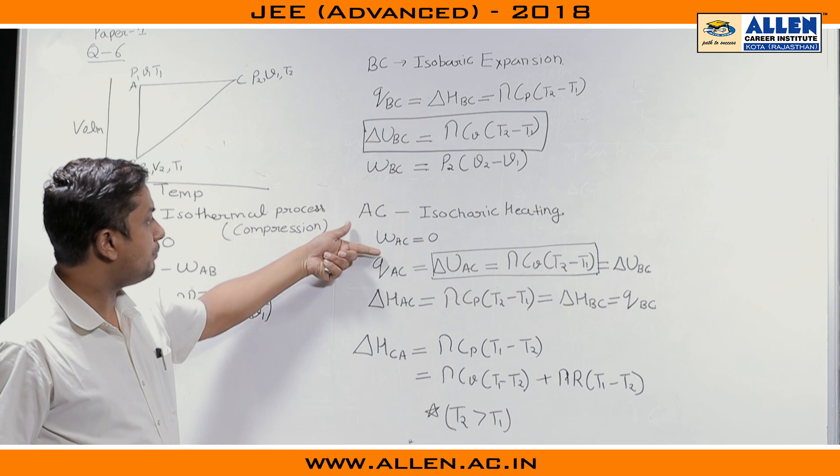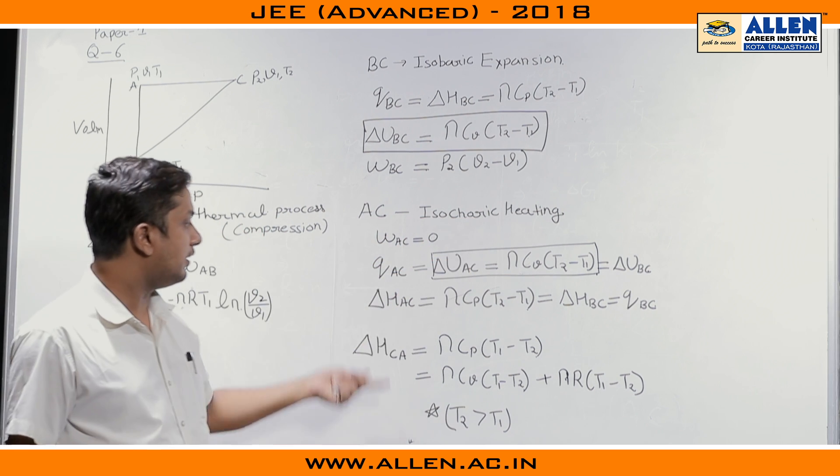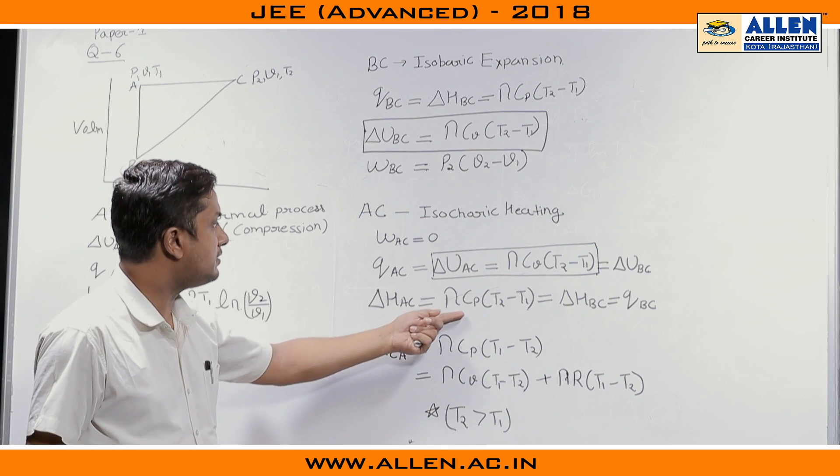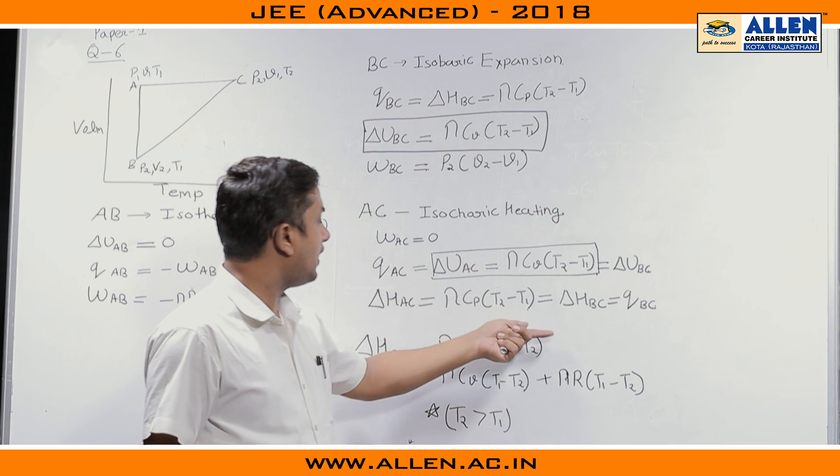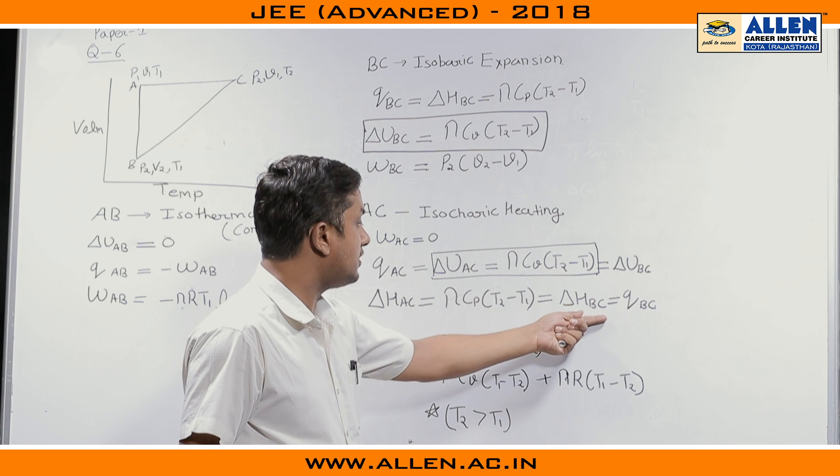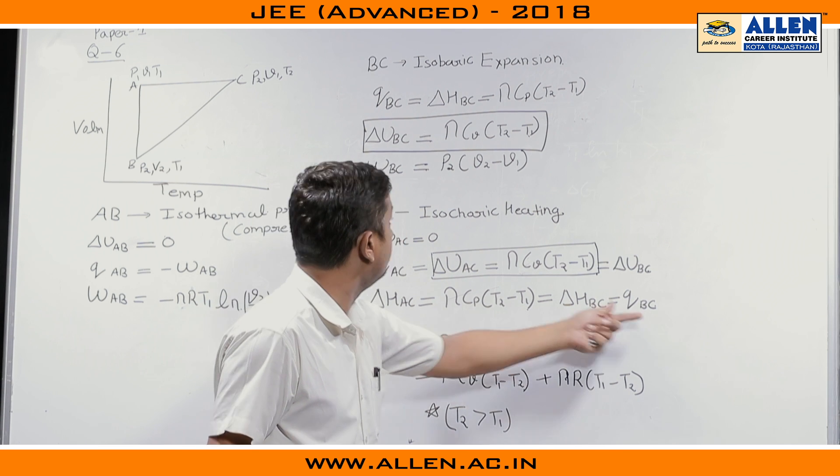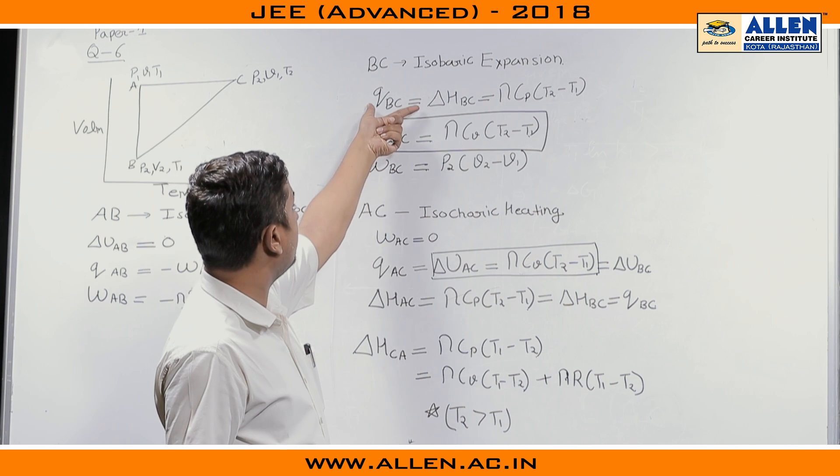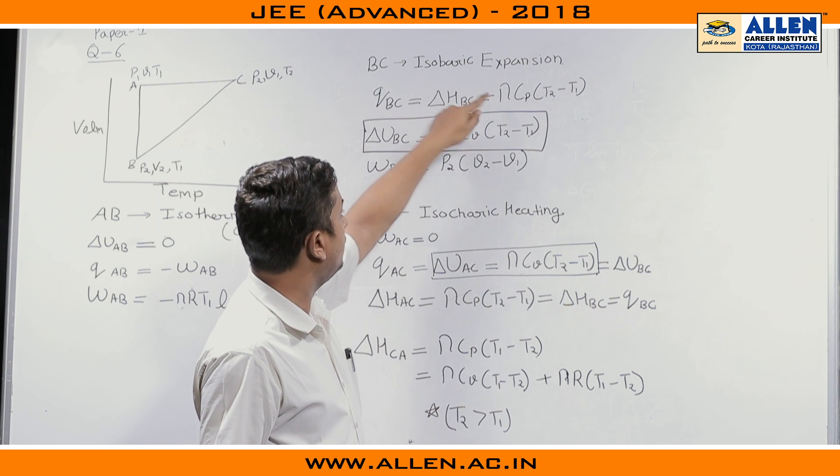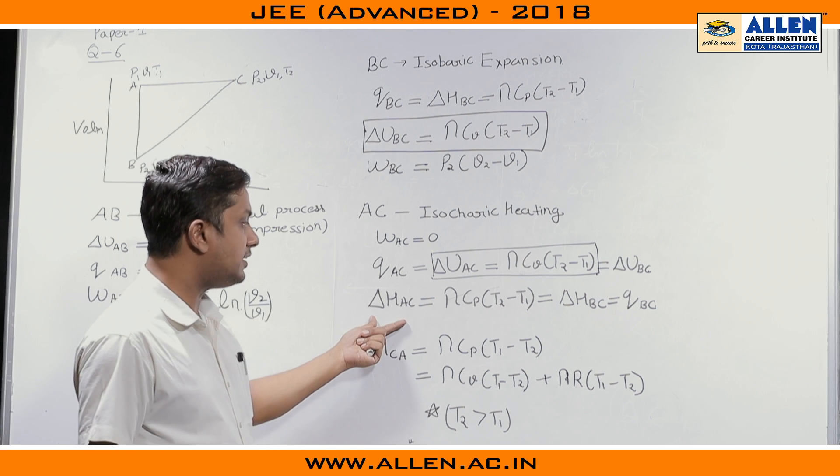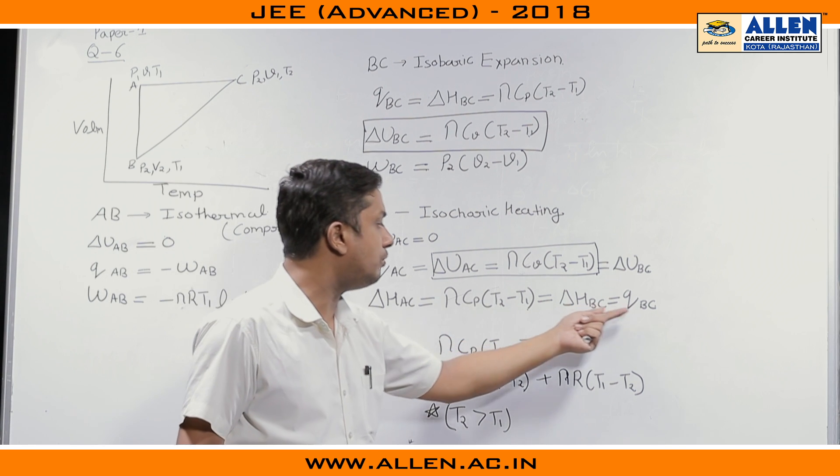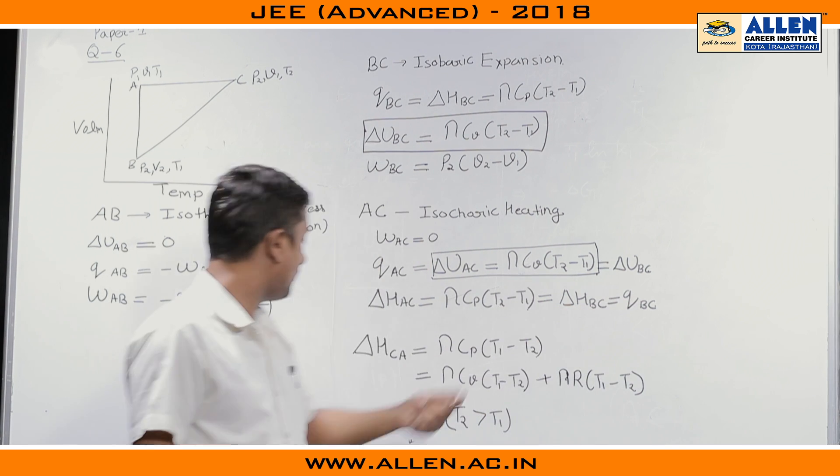Now, the enthalpy change for isochoric heating that will be equal to nC_P(T₂ minus T₁) which can be written as my delta H_BC equals to Q_BC. As we have calculated previously, my Q_BC was equal to nC_P(T₂ minus T₁). So, the delta H_AC also becomes equal to Q_BC.